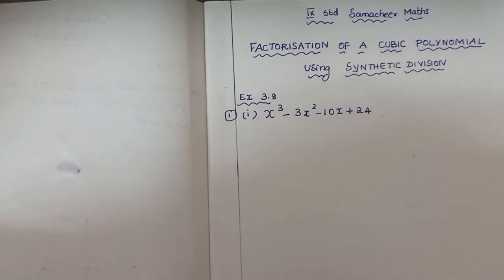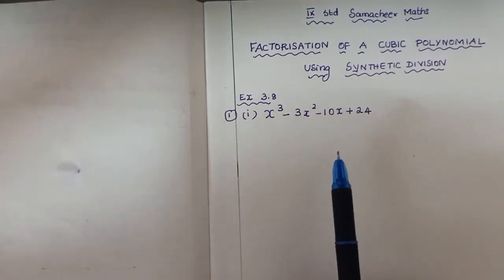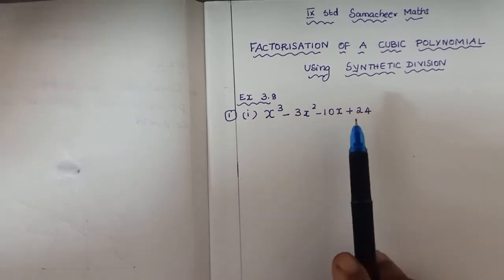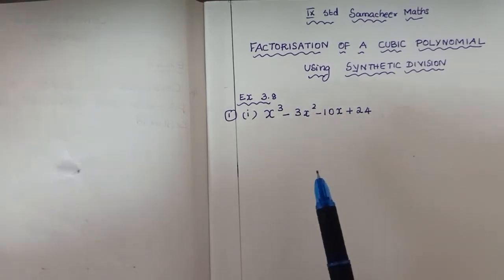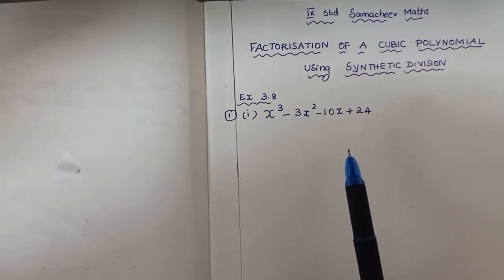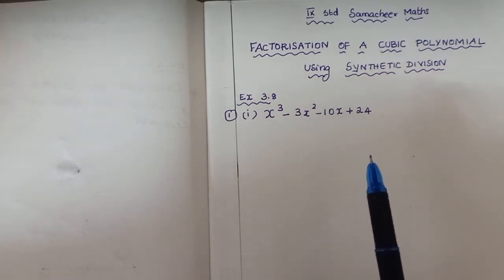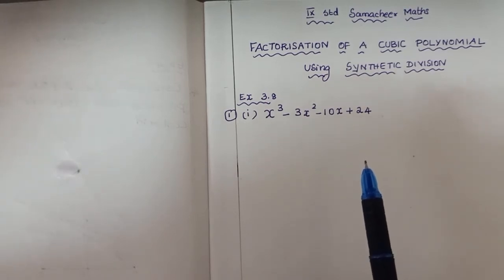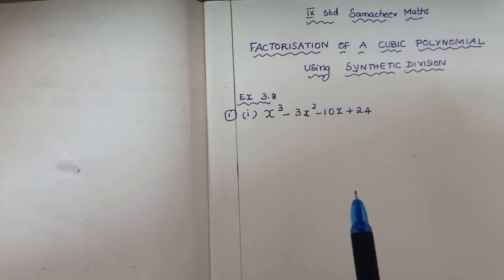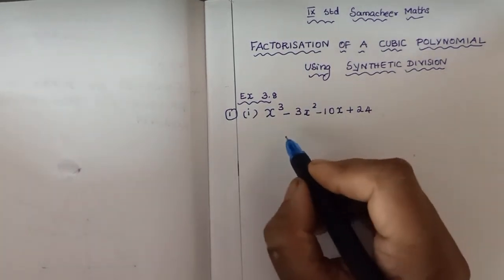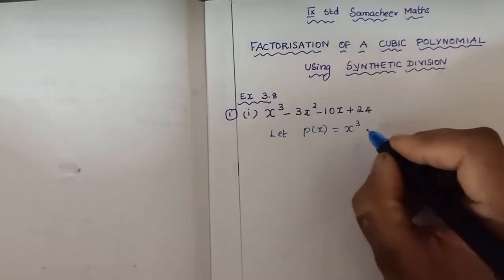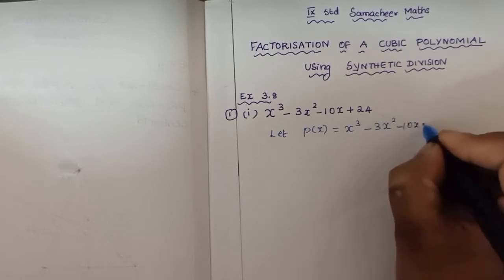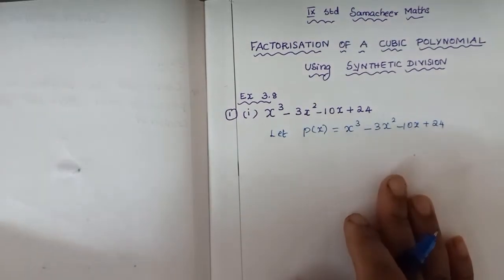We are going to do division — that is called synthetic division. Here we use the coefficients: x cube coefficient is 1, then minus 3, minus 10, and 24. But first we need to find a linear factor using the trial and error method. We find the zero of the polynomial — the value that makes the polynomial equal to zero. That value gives us the first linear factor. Let p(x) = x cube minus 3x square minus 10x plus 24.